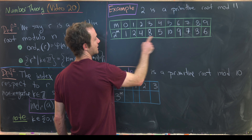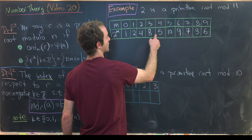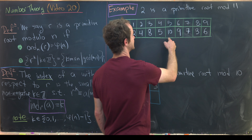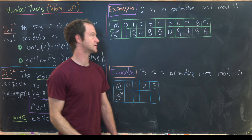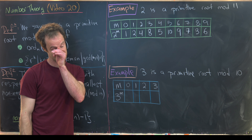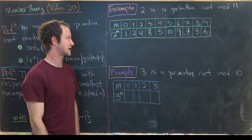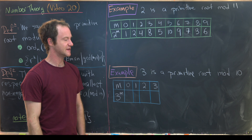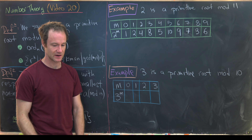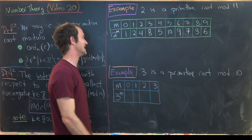Notice we have 1, 2, 3, 4, 5, 6, 7, 8, 9, 10 — all of the numbers between 1 and 10, which is exactly what we expect for a primitive root.